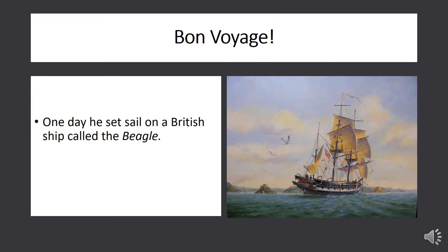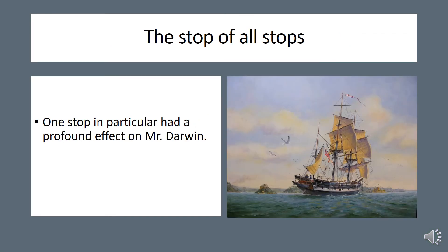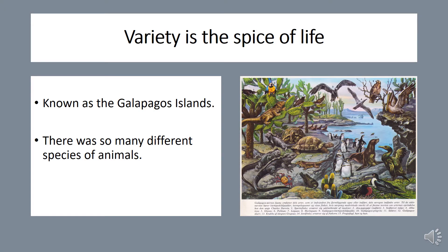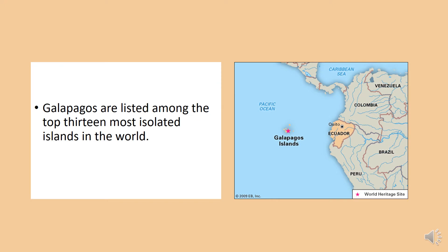One day Darwin set sail on a British ship called the Beagle. His trip around the world lasted five years. One stop in particular had a profound effect on Darwin — the Galapagos Islands. These islands contained so many different species of animals, very similar to the ones he saw in South America, but also very different. The Galapagos Islands are listed among the top 13 most isolated islands in the world.